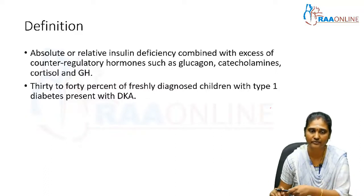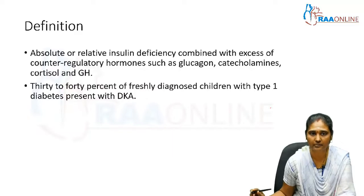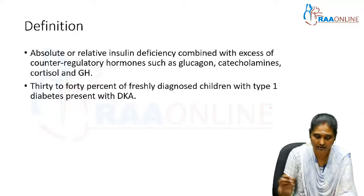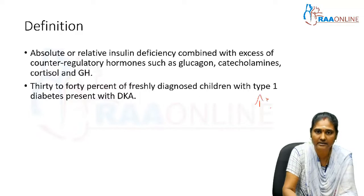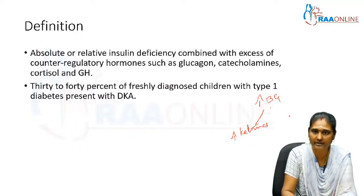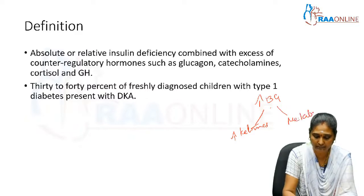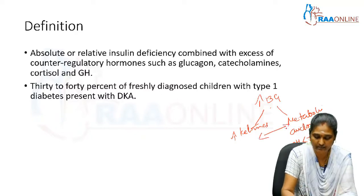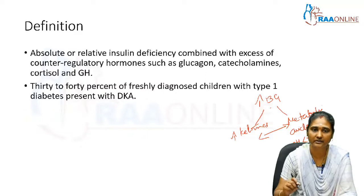The classic triad of biochemical parameter abnormalities observed in DKA includes: hyperglycemia — that is increased blood glucose — increased ketone body formation including elevated acetones, beta-hydroxybutyrate, and acetic acid, and finally metabolic acidosis, that is pH less than 7.3.